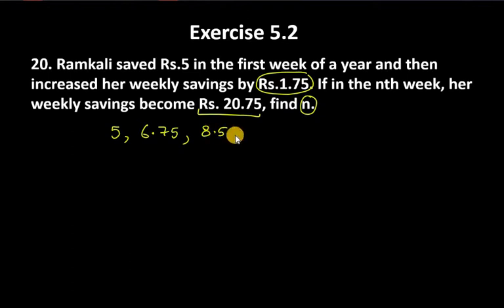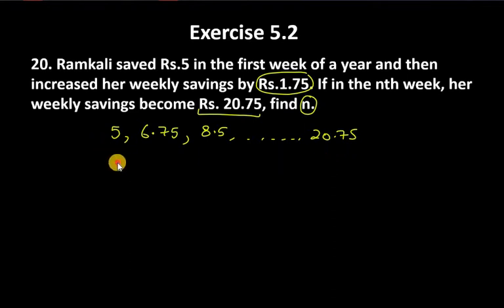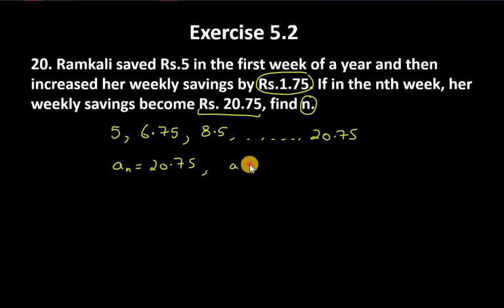Now we will use the formula. The target value is 20.75. The first term, a, is 5. The common difference, d, is 1.75.